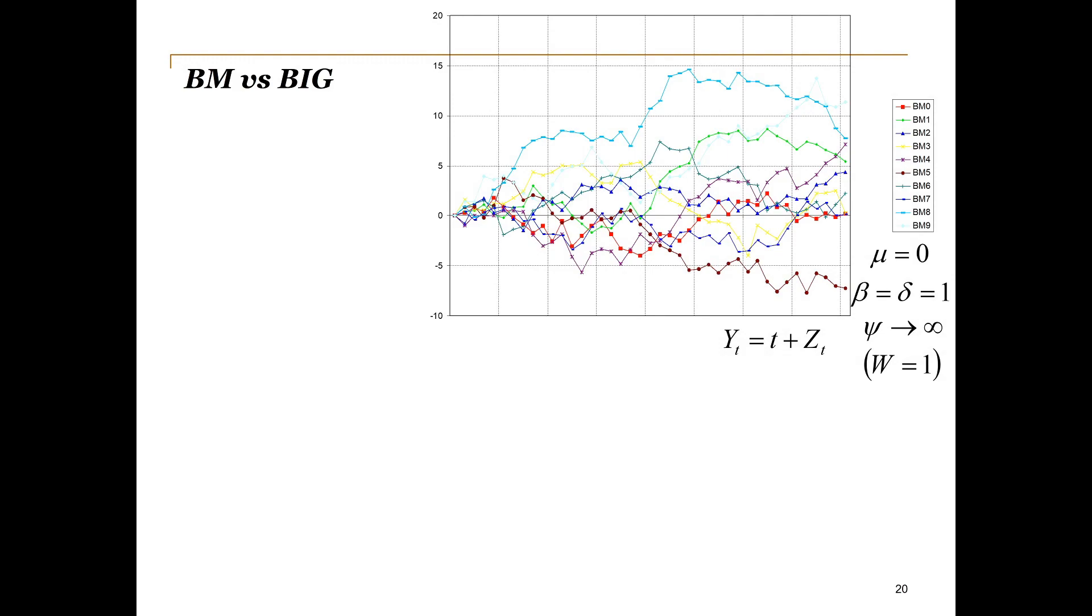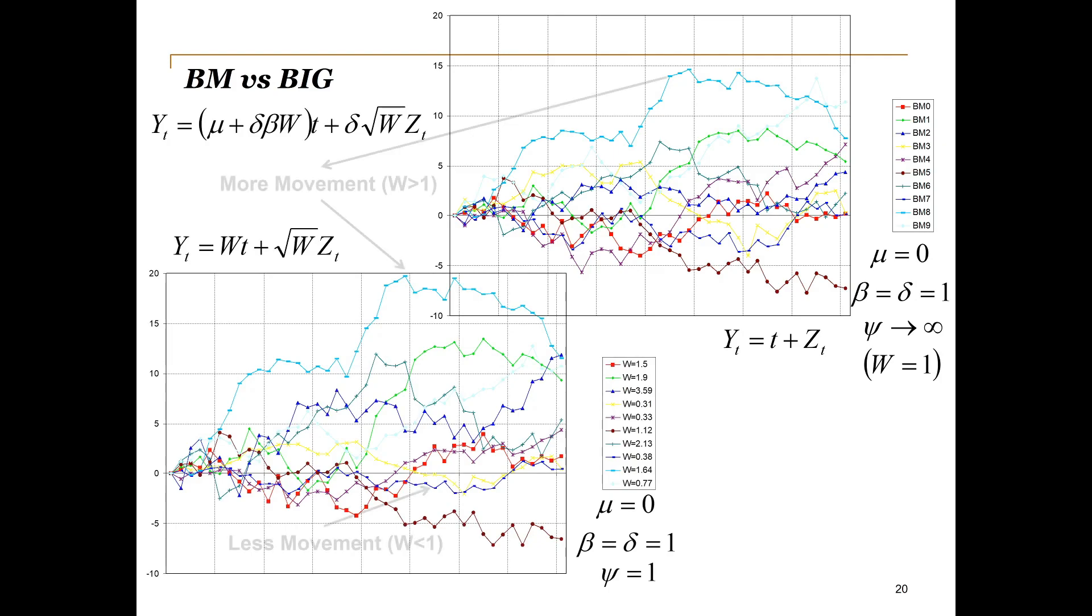The simulated Brownian motion paths tend to go upwards since the drift set to one is positive. Next, we draw 10 random observations from a unit inverse Gaussian distribution with psi equal to one and compare the corresponding Brownian inverse Gaussian processes with the Brownian motion paths. It is clear that for W larger than one, the drift and volatility is enhanced, leading to bigger steps or in terms of distributions, more weight in the tails. This equates to larger than normal share price movements. For W smaller than zero, the steps are diminished, which corresponds to a distribution with a higher peak.